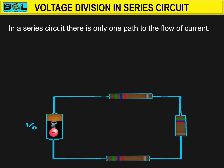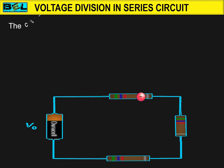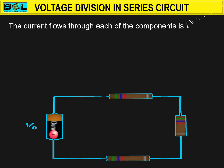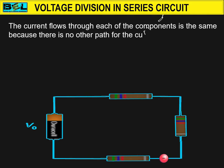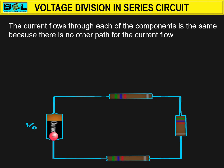So the current in the first resistor will be the same as the current in the other two resistors. The current that flows through each of the components is the same, because there is no other path for the current to flow. For example, if the current in the first resistor is 1 Ampere, then the current in the other two resistors will also be 1 Ampere.